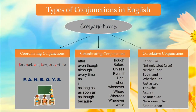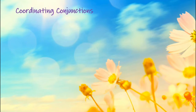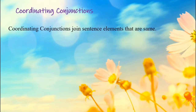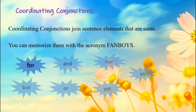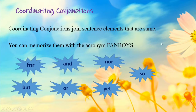Let's now read about the types of conjunctions. There are basically three types: the coordinating conjunctions, the subordinating conjunctions, and the correlative conjunctions. Let's now read about the coordinating conjunctions. Coordinating conjunctions join sentence elements that are the same. We can remember them with the acronym FANBOYS — F for FOR, A for AND, N for NOR, B for BUT, O for OR, Y for YET, S for SO.